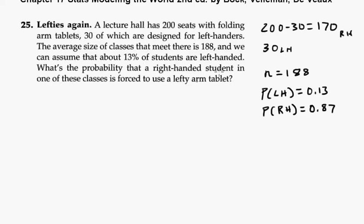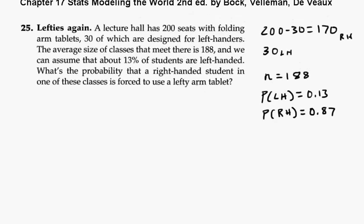So what's the probability that a right-handed student in one of these classes is forced to use a lefty arm tablet? There's 170 available for right-handers, so that would mean there has to be more than. We want the probability that x is greater than or equal to 170.